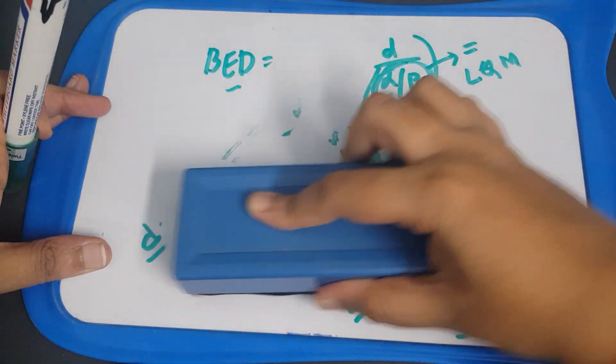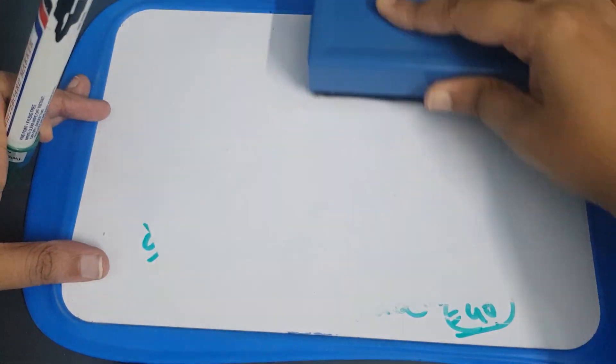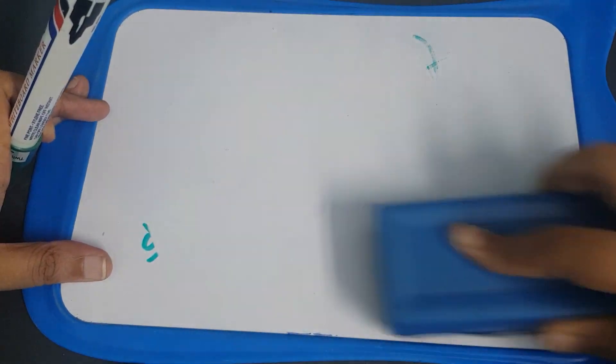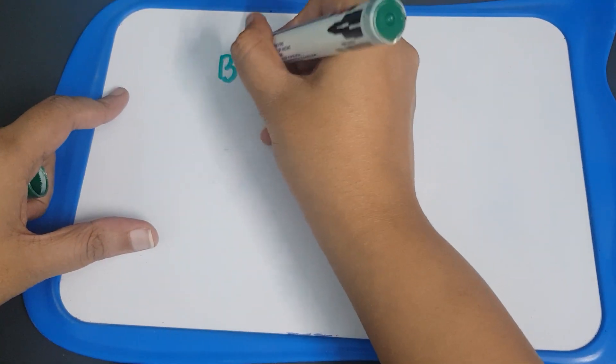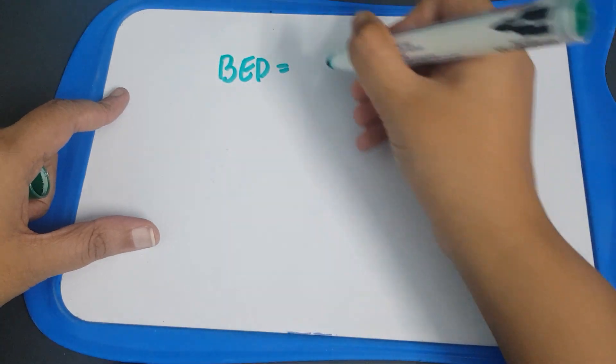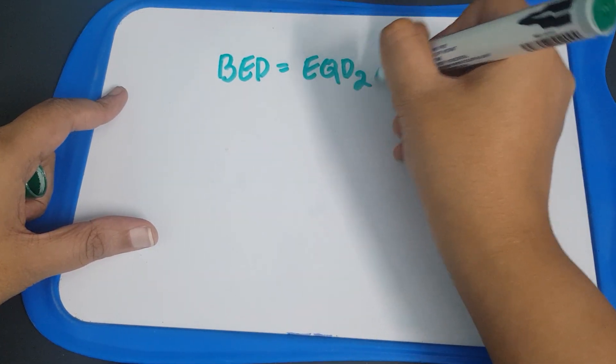Now, similarly what is EQD2? EQD2, it is similar to the effectiveness but in a instance. Now in the same formula BED, if you put the, I'll tell you one second.